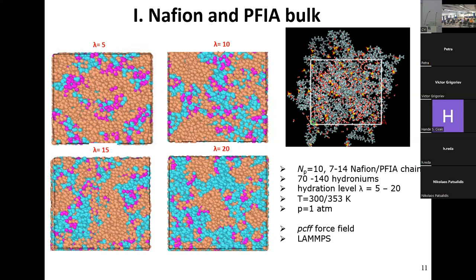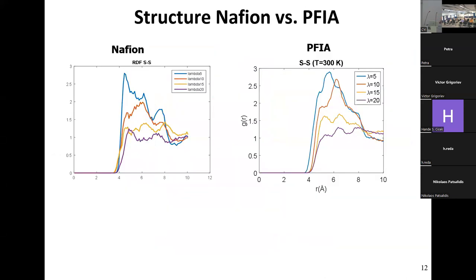These are simulation snapshots: orange domains are the hydrophobic backbones, and the other colored domains are micelles mainly made of water, hydronium ions, and charged sulfonate groups. As lambda increases, the domains start to connect — percolation. Above lambda 15 you already have percolation, which is important because connectivity is needed for proton transport.